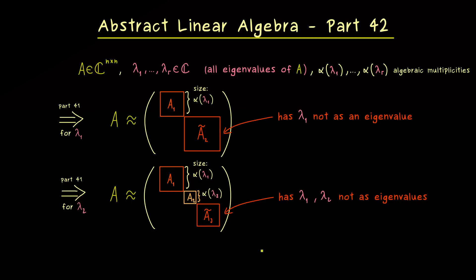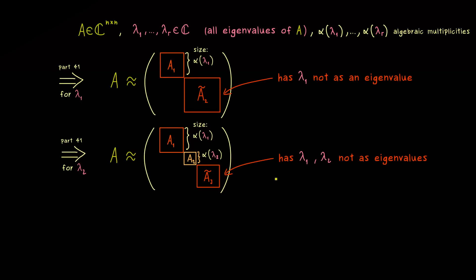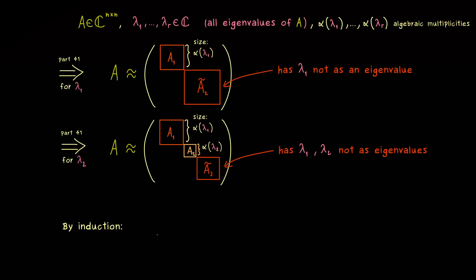So the whole thing should be clear. We go through it recursively. Or to say it shortly, by induction we get our whole block diagonal form. Which means our matrix A can be written in this block form where the blocks have sizes given by the algebraic multiplicities. And there you should already see, this is almost our Jordan normal form.